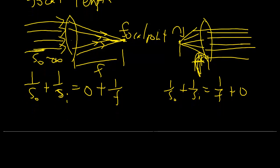So for both cases, it's the same thing, and because that's constant for a given lens, we can characterize the lens by its focal length, one over SO plus one over SI is equal to one over F.